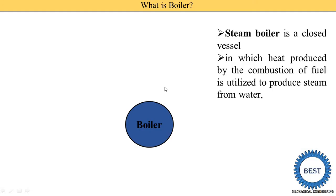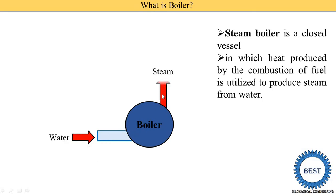This heat is utilized to produce steam from water. I will show you the different inputs to the boiler. The first input is water, and this water is converted into steam. To convert water into steam, we require some heat energy, and this heat energy comes from different fuels.